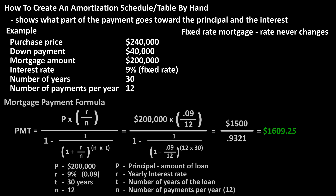Using the mortgage payment formula, as you see here, their monthly payment will be $1,609.25, rounded off.